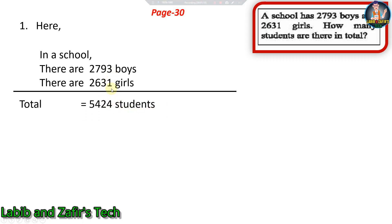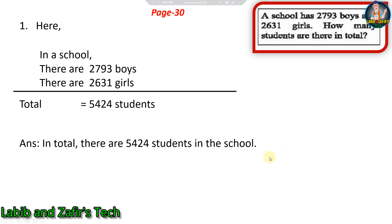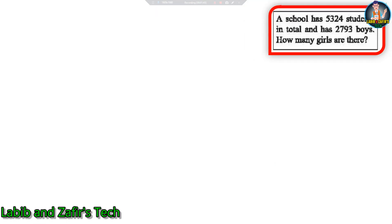Let's see the solution. Adding: three plus one is four, nine plus three is twelve — write two, carry one. Six plus one is seven, seven plus seven is fourteen — write four, carry one. Two plus one is three, three plus two is five. So the answer is five thousand four hundred twenty-four students in total.